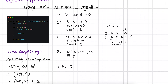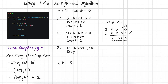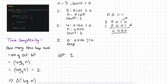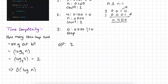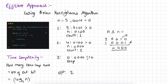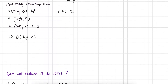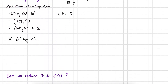Talking about the time complexity of this function: this loop runs exactly equal to the number of set bits in the number. The number of set bits in n is approximately log base 2 of n. So the time complexity of this approach is O(log n). Can we reduce it to O(1)? Yes, we have a clever way to do it.